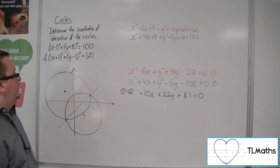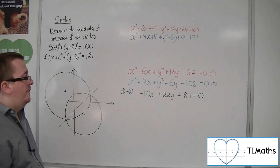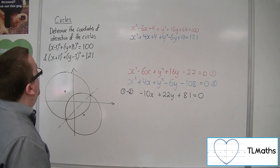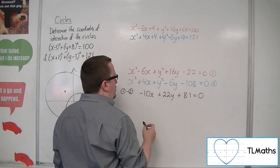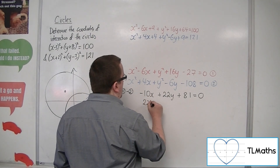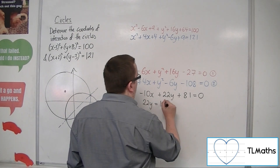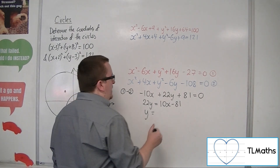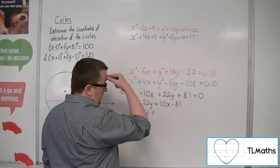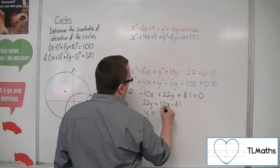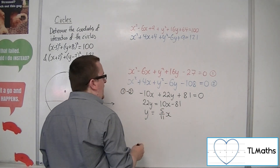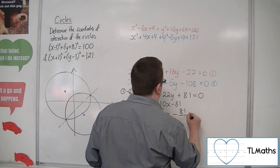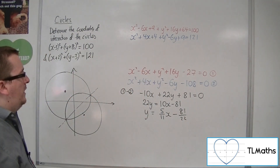That's quite nifty. However, in its current form it's a little bit messy to use. So what we're going to do is rearrange to get y equals. So 22y equals 10x minus 81, meaning y equals 5 elevenths x minus 81 over 22. That doesn't simplify further, and that is the equation of that line.